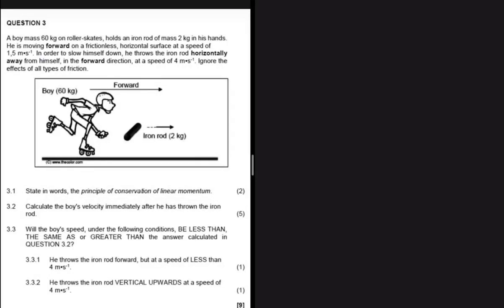3.1 is asking us to state the principle of conservation of linear momentum, which is straightforward. For 3.2 we calculate the boy's velocity immediately after he has thrown the iron rod. The difficult question is 3.3, where you really have to combine ideas of projectile motion and Newton's second law.